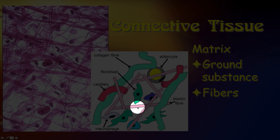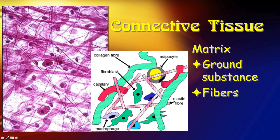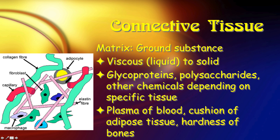You can see some of that in this cartoon too. The adipocyte, fibroblast, macrophage — anything with a black dot in the middle is a cell. We have the green collagen fibers, the candy cane elastin fibers, and the white background is actually ground substance. Ground substance is a product of cells and it's generally made of things like glycoproteins and polysaccharides. This ground substance can be anything from a liquid to a solid. Even in liquid form it tends to be somewhat viscous, kind of thick — more like maple syrup than water.